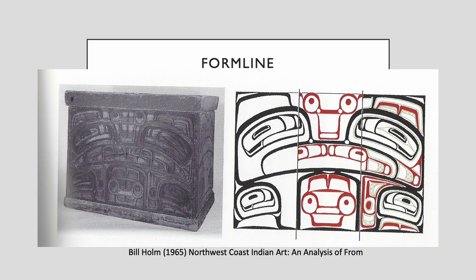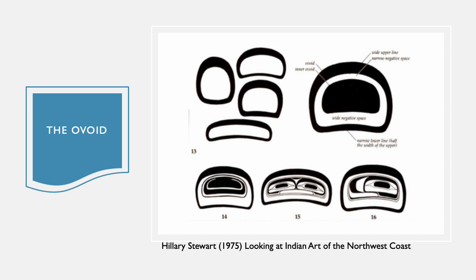Form lines are continuous flowing lines that turn, swell, and diminish in a prescribed manner. They are used for figure outlines, internal design elements, and in abstract compositions. The basic elements of form line can be seen on the right, and how those lines are represented in carving on the left. Primary lines are usually in black, secondary lines in red, and tertiary elements are typically blue-green. These designs extend to the limits of the field or the object being decorated, and all elements within the design are in harmony according to a sophisticated aesthetic.